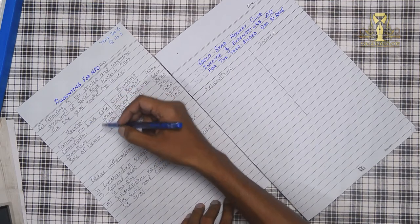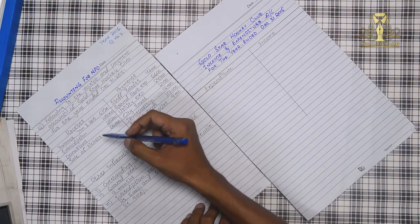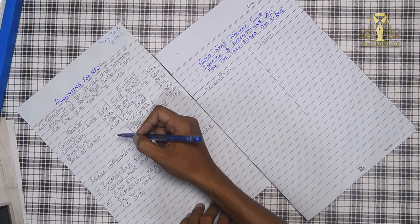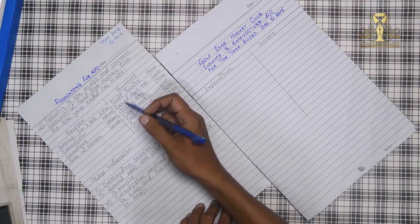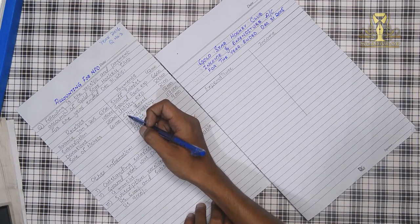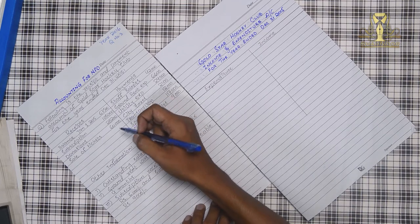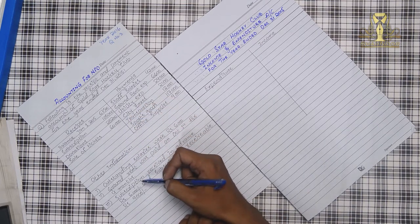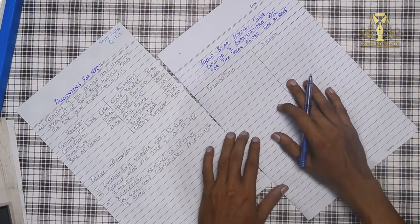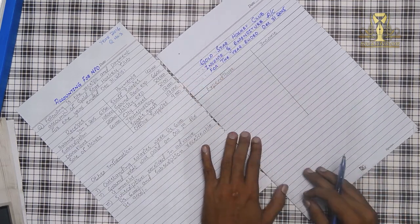This is the receipt and payment details. The receipt details are the amounts originally received in cash and bank account. Payment details are the amounts that we paid originally. This is the other information. Now we need to create income and expenditure account. When we create income and expenditure account,